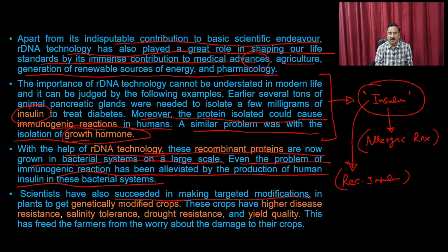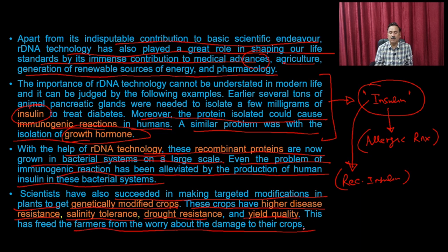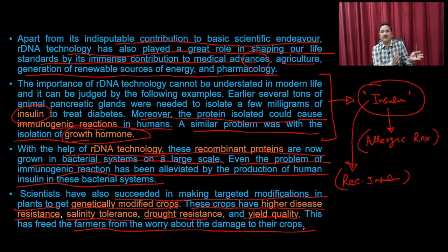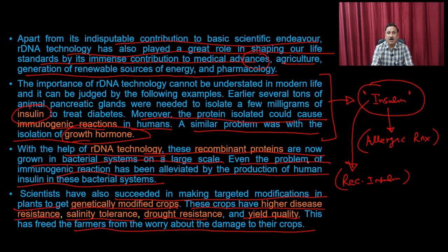Scientists have also successfully made targeted modifications in plants to get genetically modified crops with higher disease resistance, salinity tolerance, drought resistance, and improved yield, freeing farmers from worrying about dangers to their crops. All these developments did not happen in one day — they resulted from constant and rigorous discoveries over the last 100 to 200 years. Let us discuss these discoveries to understand the importance of basic research and the contributions of individual scientists.